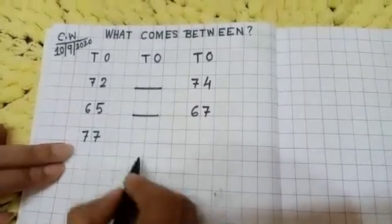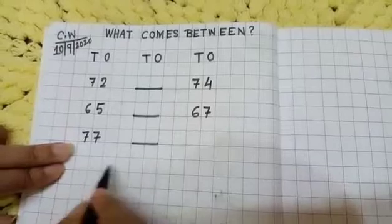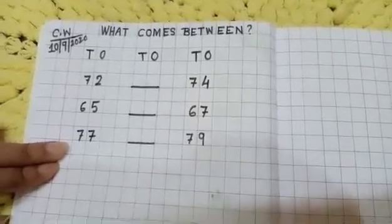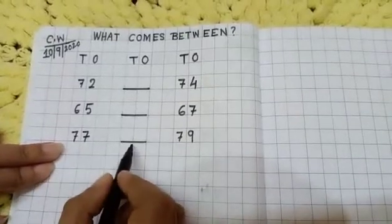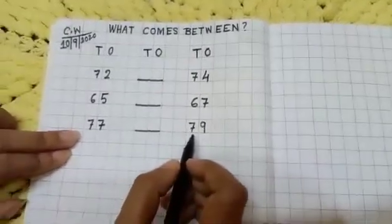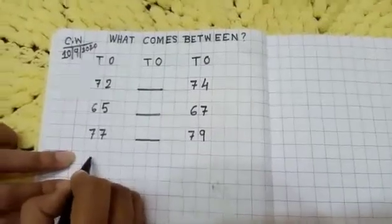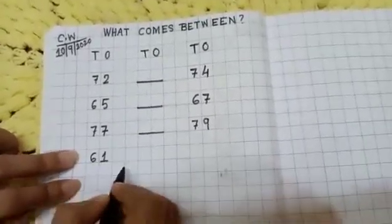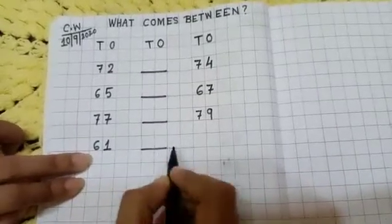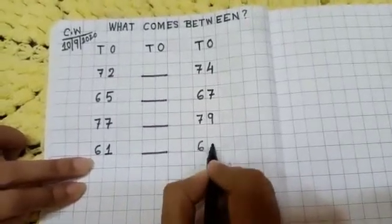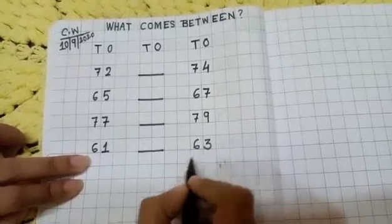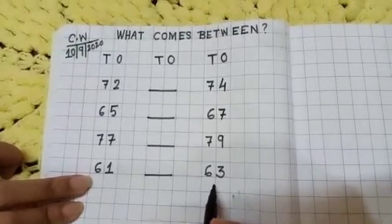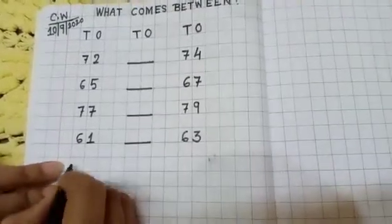Next, write: seventy-seven dash seventy-nine. Then: sixty-one dash sixty-three.